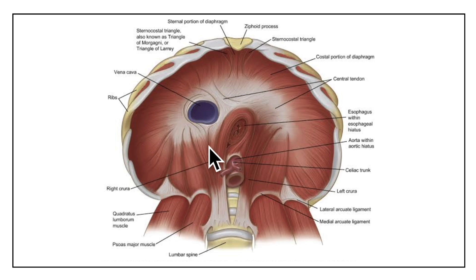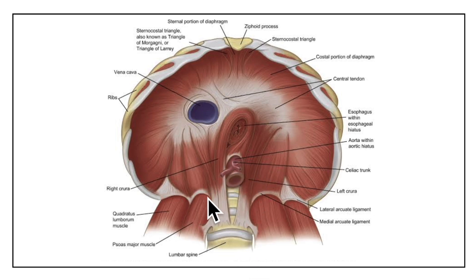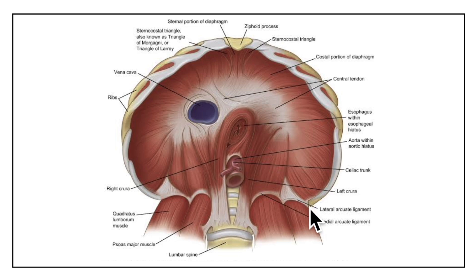The lumbar part arises from the medial and lateral lumbocostal arches and from the lumbar vertebrae by the right and left crura. The medial lumbocostal arch is also called the medial arcuate ligament, and the lateral lumbocostal arch is also called the lateral arcuate ligament. Here are the lumbar vertebrae and the right and left crura.